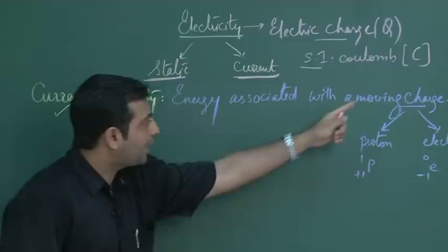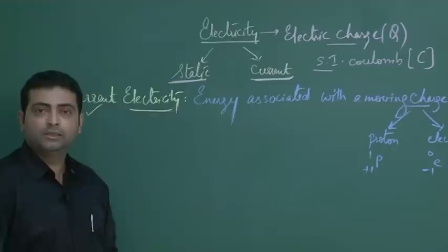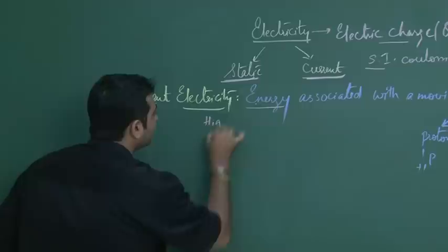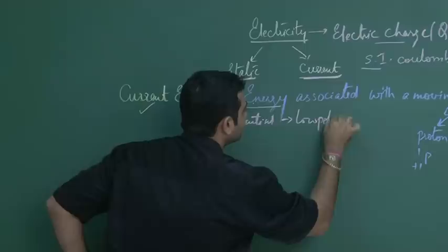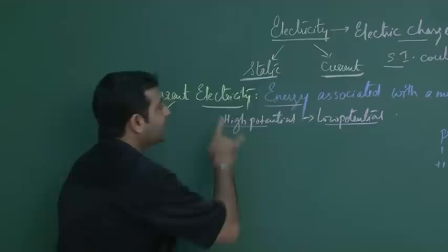When I speak about flow of charge — flow of protons — what happens? It has some energy associated with it. Energy always flows from a region of high potential to a region of low potential. So when one wants to speak about flow of energy, energy always flows from a region of high potential to a region of low potential.